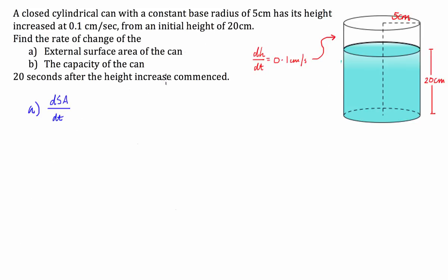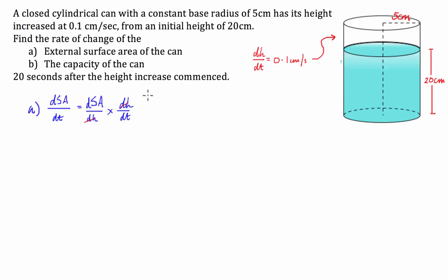So the way we're going to use related rates to solve this change in surface area over the change in time is we're going to relate the change in surface area to the change in height, and then multiply that by the change in height over the change in time. So we're going to say the derivative of surface area with respect to height, multiplied by the derivative of height with respect to time. The DHs will cancel and we'll be left with DSA/DT.